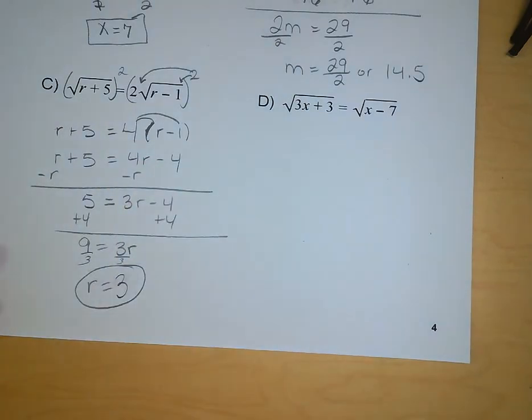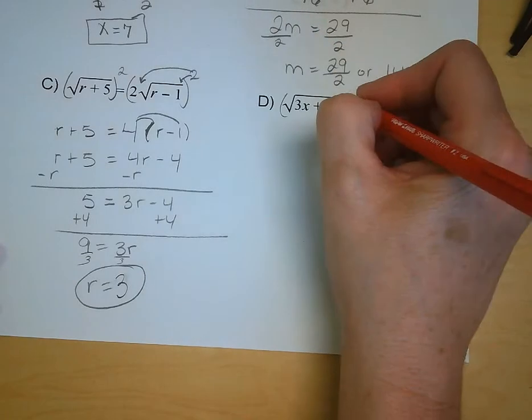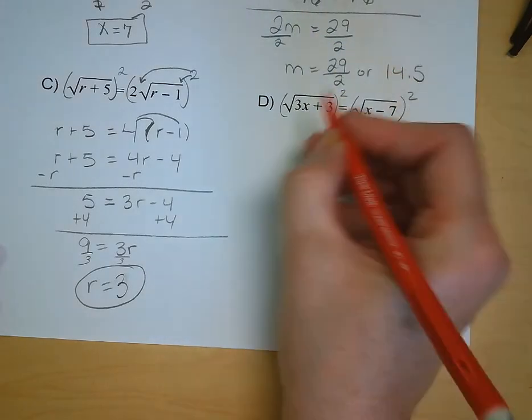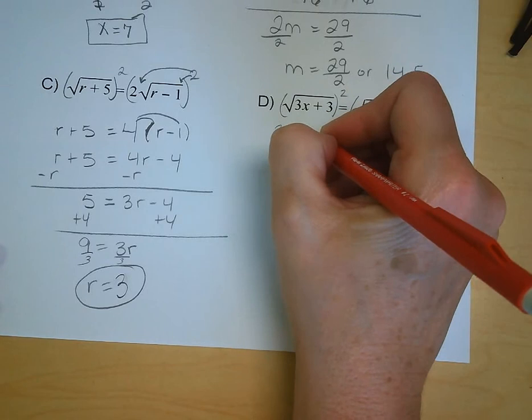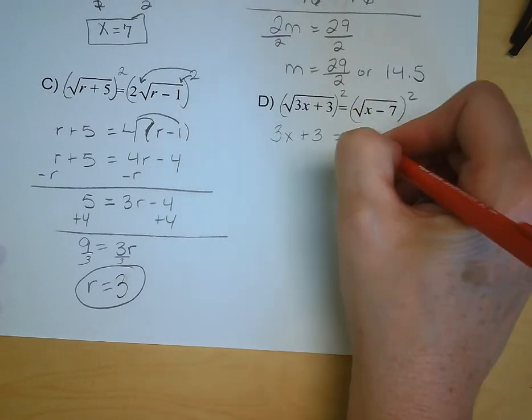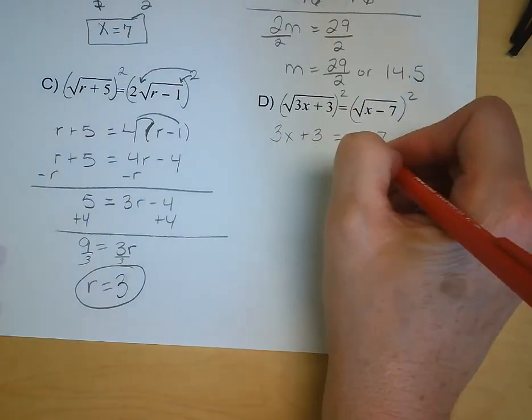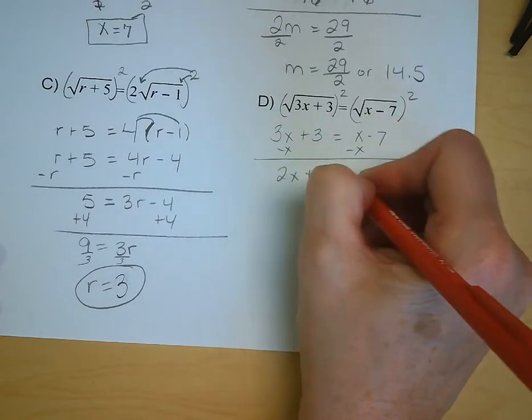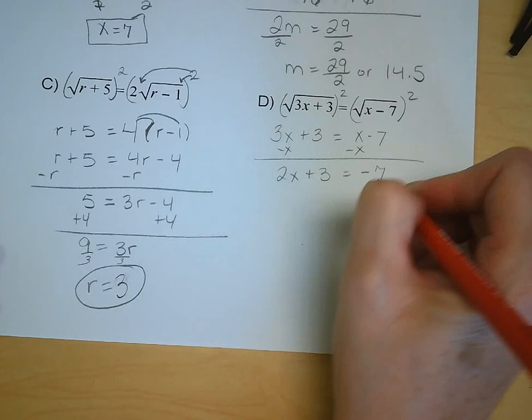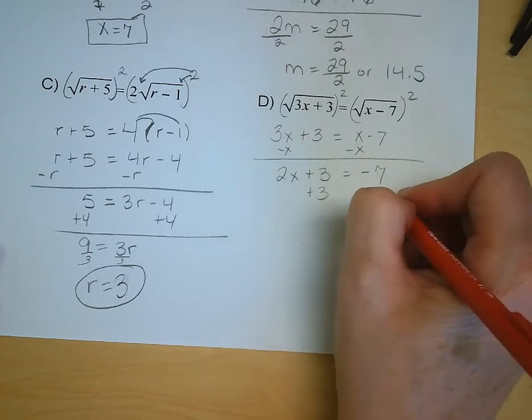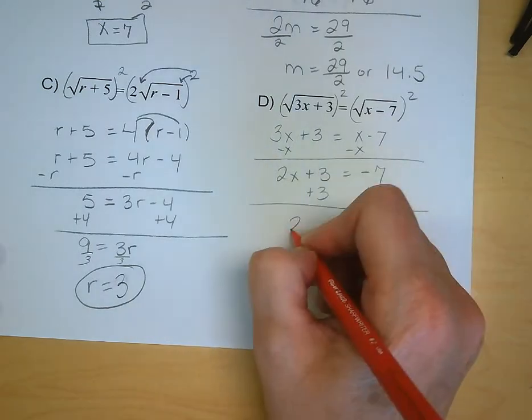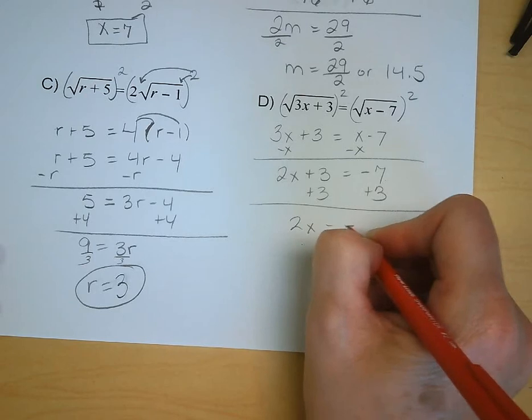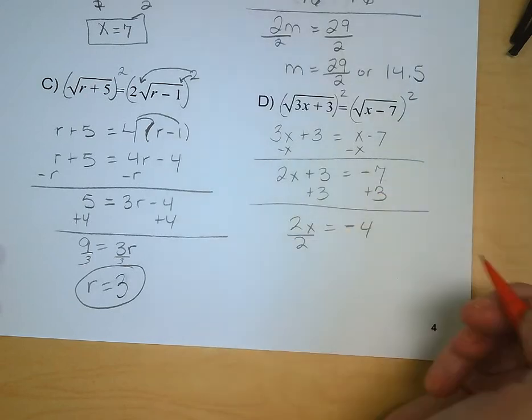Letter D. Square both sides of the equation. We get 3x plus 3 is equal to x minus 7. Subtract x from both sides. 2x plus 3 is equal to negative 7. Subtract 3 from both sides because it's 2x plus 3.